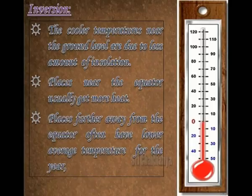Inversion: The cooler temperatures near the ground level are due to a lesser amount of insolation. Places near the equator usually get more heat, while places far away from the equator often have lower average temperatures.